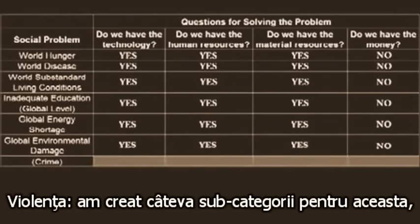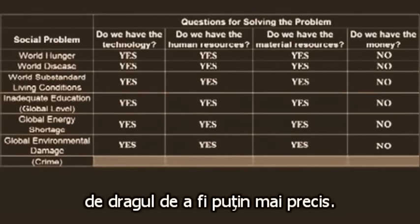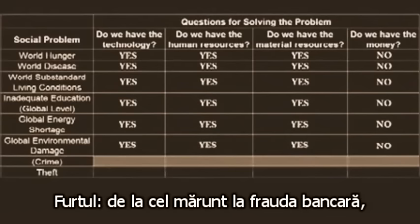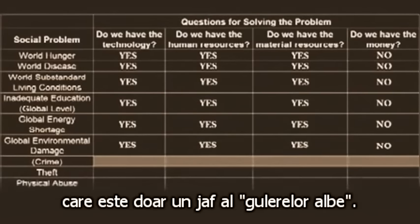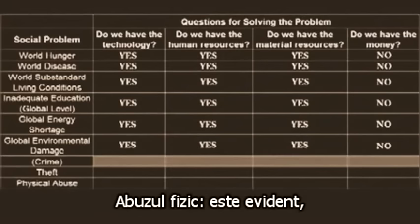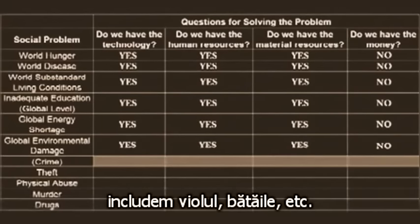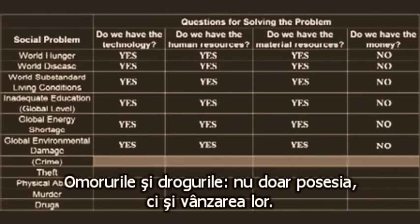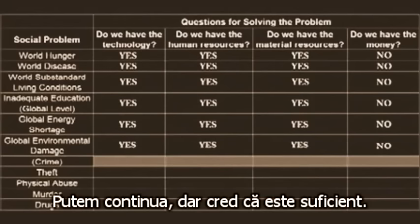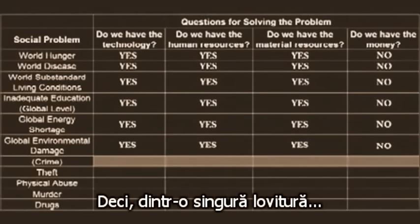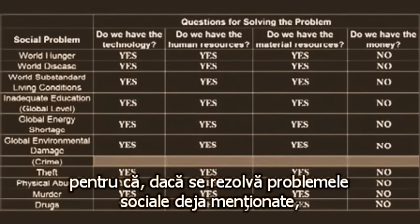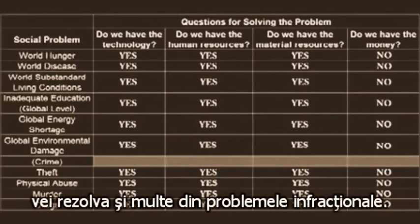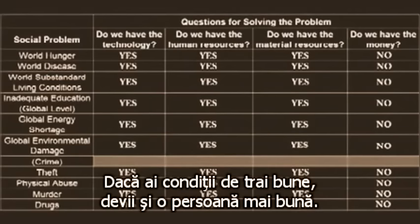Crime. I've created a few subcategories for this just for the sake of being a little more precise. Like theft — from petty larceny to banking fraud, which is really just white-collar theft. Physical abuse, including rape and beatings. Murder and drugs, not just possession but also sale. In one simple stroke — if you fix all of the above social problems, you'll end up fixing many of the crime problems by default.